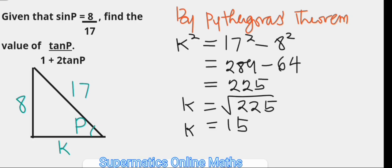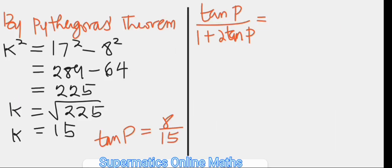Now that we have the length of the side k, we can find the ratio of the tangent of the angle P. Tan P is the ratio of the opposite side to the adjacent side, that is 8 over 15. Now this can be substituted into the expression tan P over 1 plus 2 tan P and then simplified. This becomes 8 over 15 divided by 1 plus 2 times 8 over 15.